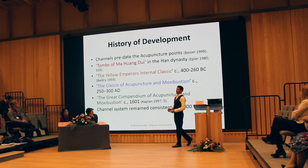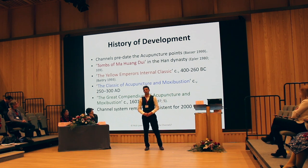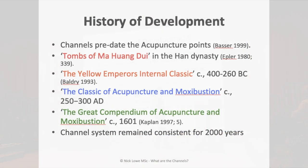The channels definitely predate the point system historically. The first references we have are in the tombs of Ma Hongwei. These texts and images talk about the channels more in a health cultivation practice — Dao Yin exercises, breathing exercises. It's not until we get to the Neijing, the Yellow Emperor's Classic, where the channel and point system is systematized within the context of Chinese medicine practice, acupuncture, massage, herbs, and these kinds of things.